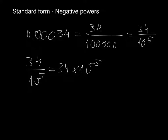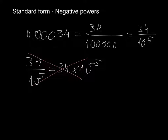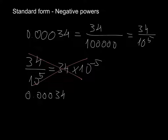Now, normally we don't use 34. Remember, what we usually do is we use the first number, point, and then the second number, and then whatever. So in this case, the standard form answer wouldn't be 34 times 10 to the minus 5. We would go until we have found the first digit — so 0.00034 is the same as saying 3.4 times 10 to the minus 4.